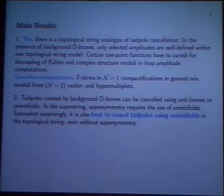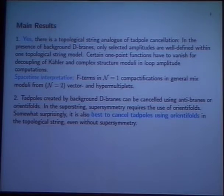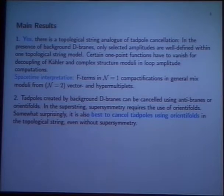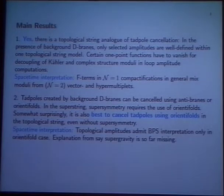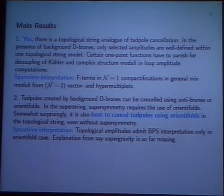The second result is: how should we cancel the tadpoles? In general, we can cancel the tadpoles from background D-branes using anti-branes or orientifolds. In the superstring, supersymmetry requires the use of orientifolds. As I'll show, also in the topological string, it's best to cancel the tadpoles using orientifolds. That statement is based on the relation to the spacetime interpretation and the fact that topological amplitudes have a BPS interpretation only in this orientifold case.